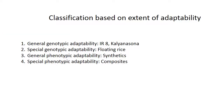Classification based on extent of adaptation: General genotypic adaptation — examples are IR8 or Kalyan Sona — means adaptability to a wider range of conditions. Specific genotypic adaptation means a genotype adapted to a particular area, like floating rice. General phenotypic adaptability — example is synthetics — which are phenotypically adapted to a large area. And specific phenotypic adaptation means composites, which are limited to a definite area.